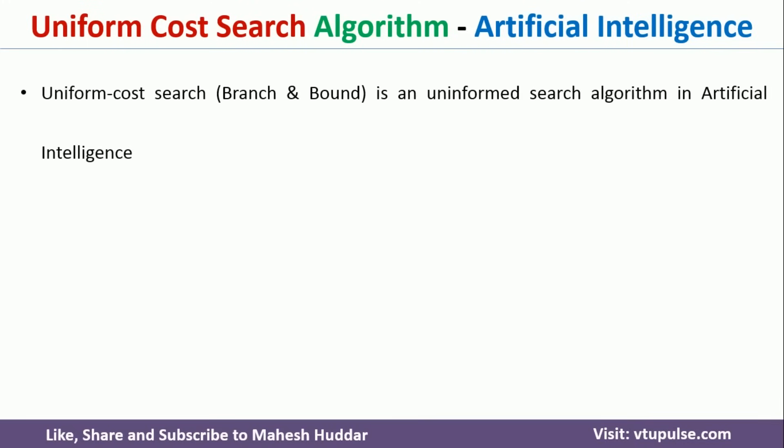Uniform Cost Search Algorithm is an uninformed search algorithm in Artificial Intelligence. There are other uninformed search algorithms like DFS and BFS. I have already discussed those algorithms and the links for those videos are given in the description below.